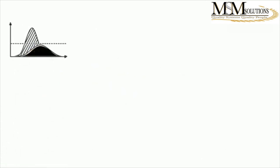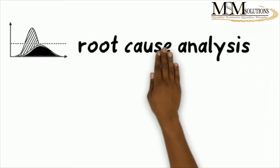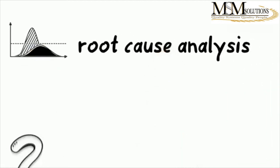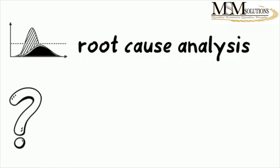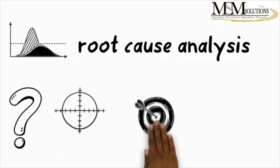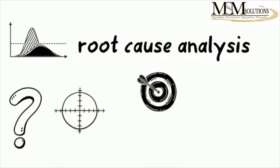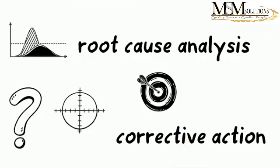Now that we know how to do a trend analysis, what you need to do is a root cause analysis — find out where your problem lies. Do you have a precision problem or an accuracy problem, and where does it actually come from? There is no point in doing trend analysis if you don't do anything to fix it, and to fix it you need a proper root cause analysis to apply the correct corrective action.